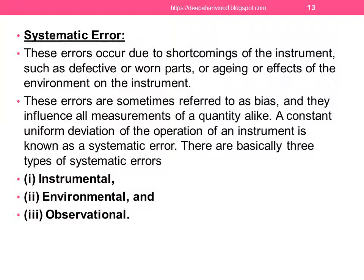Systematic error. These errors occur due to shortcomings of the instrument such as defective or worn parts, aging, or effect of the environment on the instrument. Like instrument changes when the temperature changes, or aging effect when the instrument was manufactured many years back. These errors are sometimes referred to as bias and they influence all measurements of the quantity alike. A constant uniform deviation of the operation of an instrument is known as systematic error. These errors are due to wear and tear, aging of parts, and equipment being affected by the environment. There are basically three types of systematic errors: instrumental, environmental, and observational.